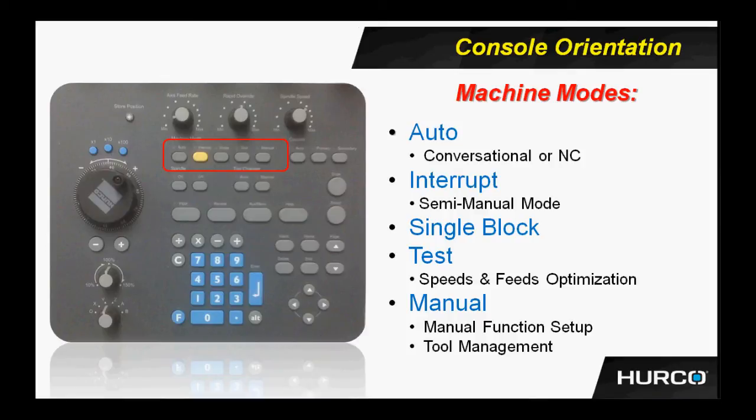The last button in the red box is the manual button. This gets me to screens where I can do my tool management. I can initiate tool changes, manual function setup features such as rapid positions. I can command an XYZ rapid position based on part zero or machine zero, and I can set the feed rates for my rapid movements.